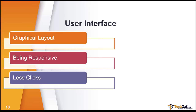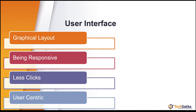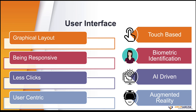How quickly can a user reach a certain functionality in fewer clicks? It must be user-centric, covering gesture-based features like touch, zoom in, zoom out, and orientation. Biometric identification, face recognition, and artificial intelligence-driven features can bring in many functionalities. Augmented reality is also something that can be integrated into your applications.